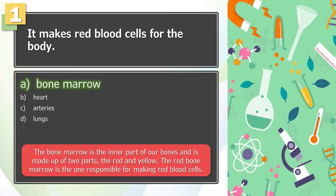The answer is A. The bone marrow is the inner part of our bones and is made up of two parts, the red and yellow. The red bone marrow is the one responsible for making red blood cells.